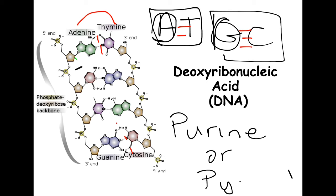Another thing to mention is the orientation. The strands — remember, DNA is double-stranded — will be anti-parallel. That means you'll have one end starting with three prime and ending in five prime, and one starting with five prime ending in three prime, so they're almost opposite of each other. The three prime end has a hydroxyl group sticking out, which is very important in making that phosphodiester bond found in the backbone of DNA.